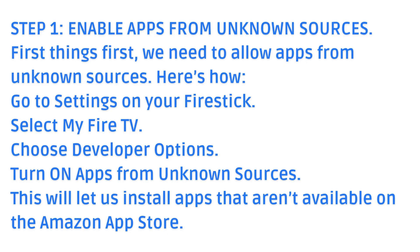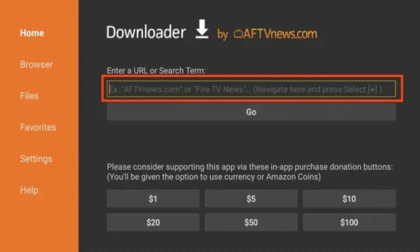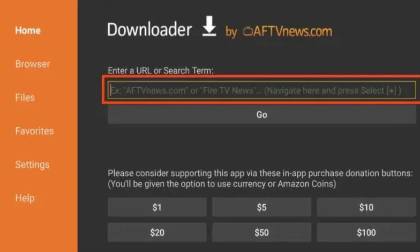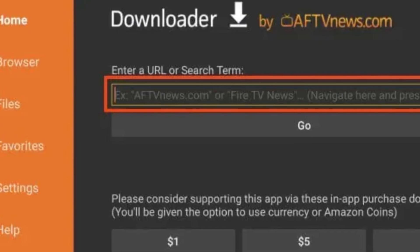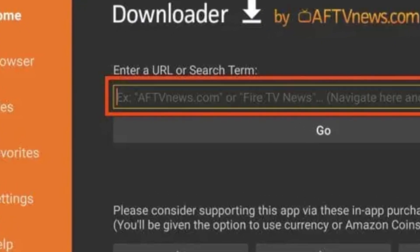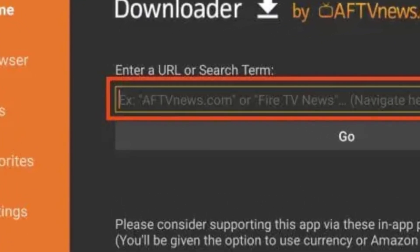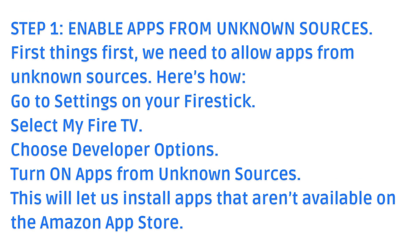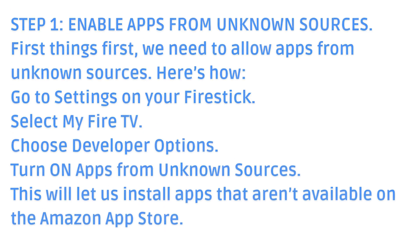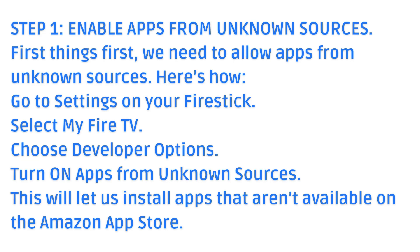Step 1: Enable apps from unknown sources. First things first, we need to allow apps from unknown sources. Here's how: Go to Settings on your Fire Stick, select My Fire TV, choose Developer Options, and turn on apps from unknown sources. This will let us install apps that aren't available on the Amazon App Store.